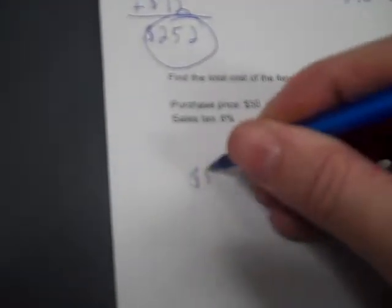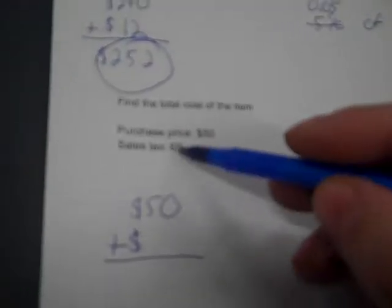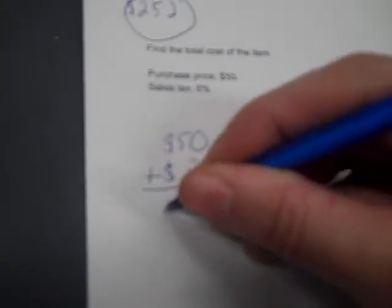I find the total cost of the item. The purchase price is $50. The sales tax is 6%. So we have $50, and on a sales tax, that's always adding. That always adds money on to the price. So I have to find 6% of $50. I divide the 6 by 100, 0.06, then multiply. So 0.06 times 50, so 50 plus 3 is $53.